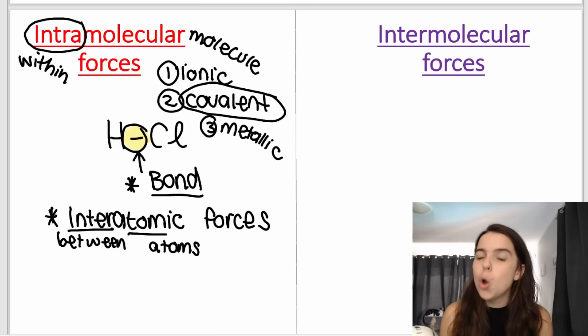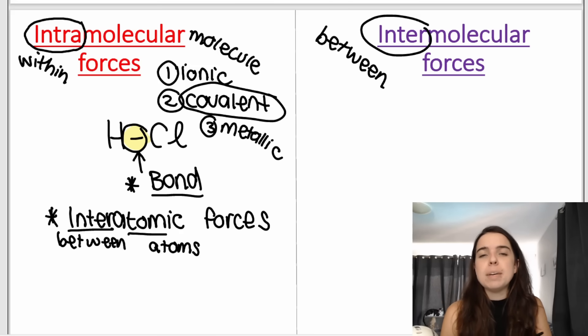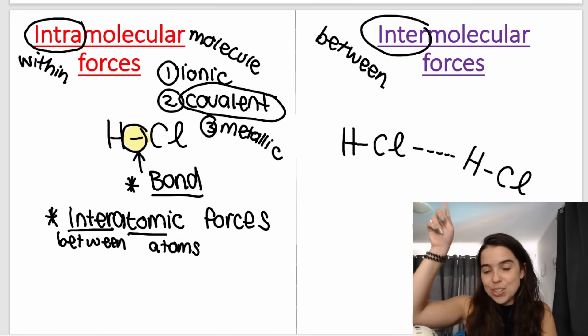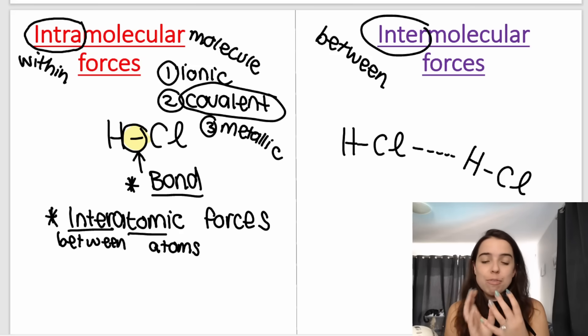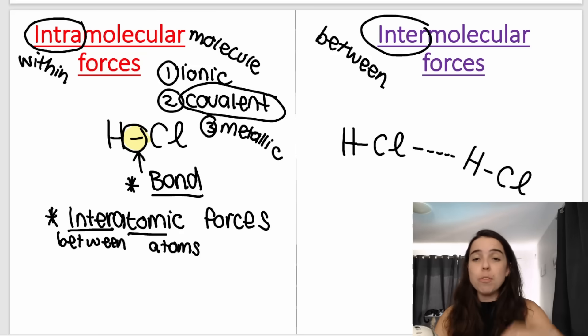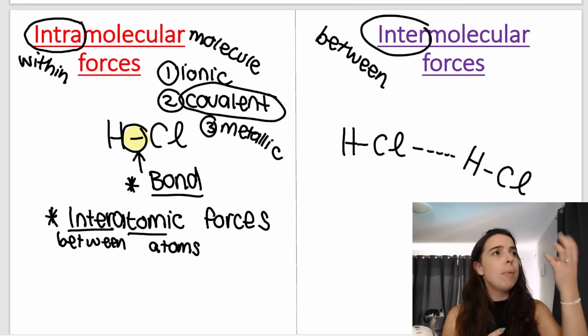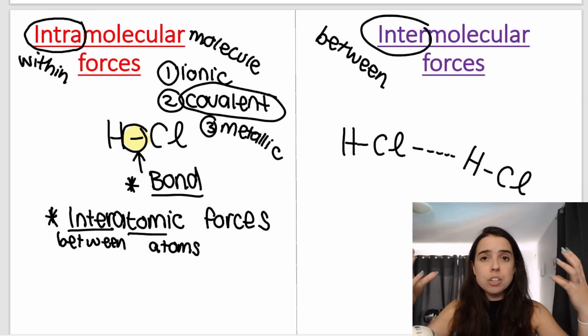But then what is intermolecular? Remember the word inter means between. So intermolecular means between molecules. For example, if I have an HCl molecule over here and another HCl molecule over here, these things are attracted to each other. All molecules have a form of attraction to other molecules. It's because of the charge distribution around the molecules. Positives and negatives, opposite charges attract. Like charges repel. So these are the attractive forces that exist between molecules.